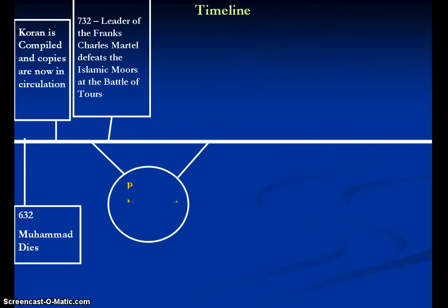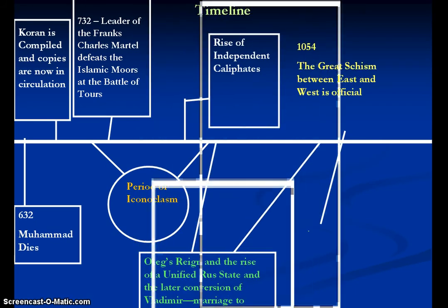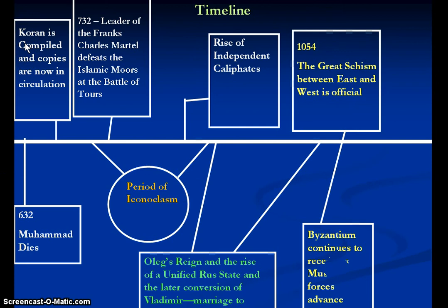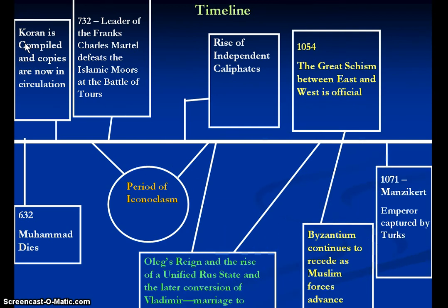Going to our next timeline: in 632, you have the death of the Prophet Muhammad, and then you have the Quran — the holy book — which is compiled and set as far as what is going to make it up. Copies are now in heavy circulation throughout much of the region where Islam is dominant. After this, you have the period of iconoclasm, which was started by Byzantine Emperor Leo III, who had been in Asia Minor.